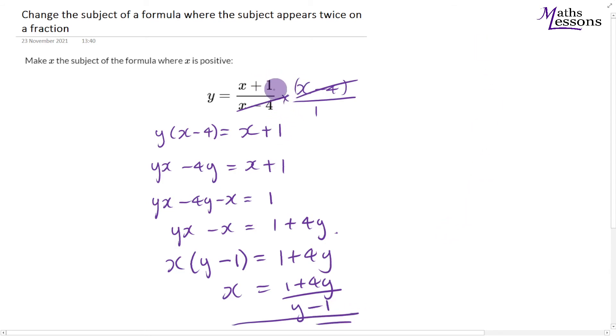To recap, we get rid of the fraction by multiplying by the denominator, multiply out the brackets, get all the x's onto the same side, factorize to get x on its own, and then divide by the other factor to get x as the subject.